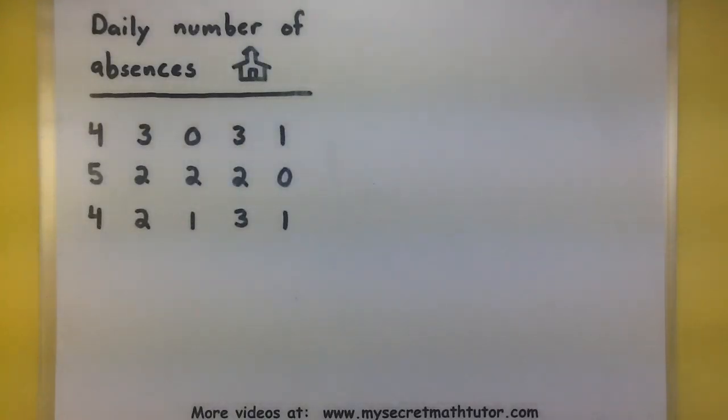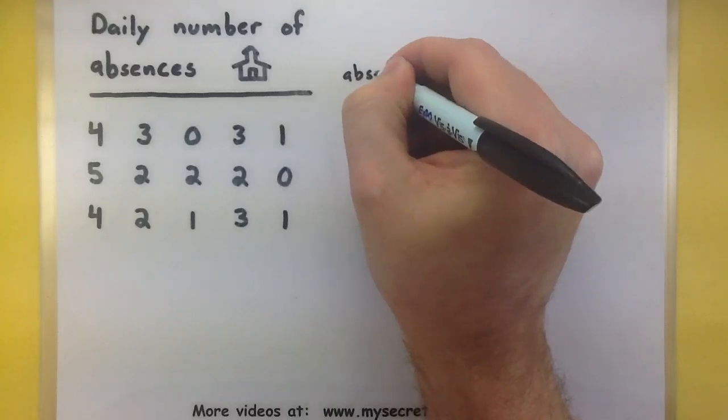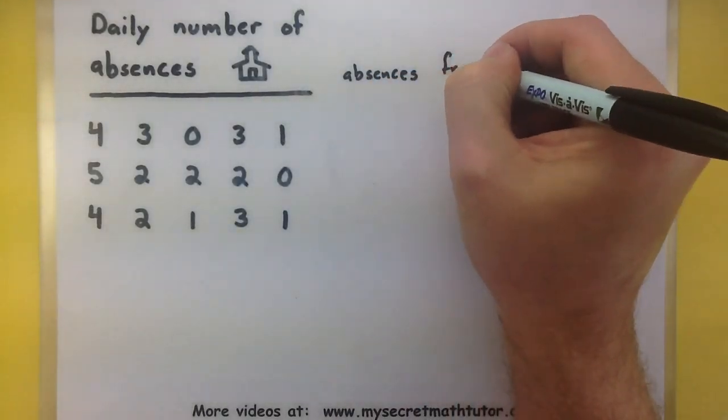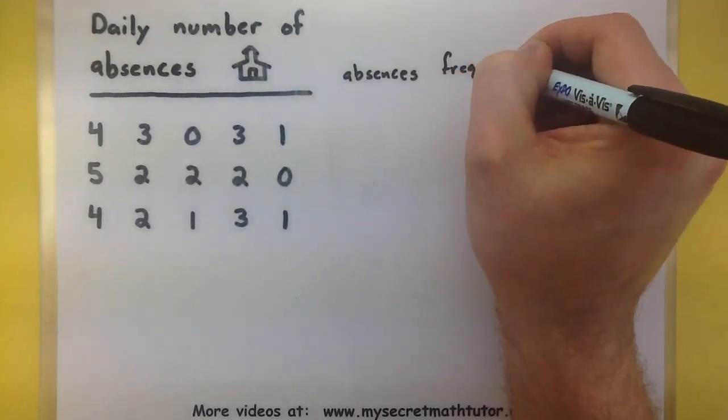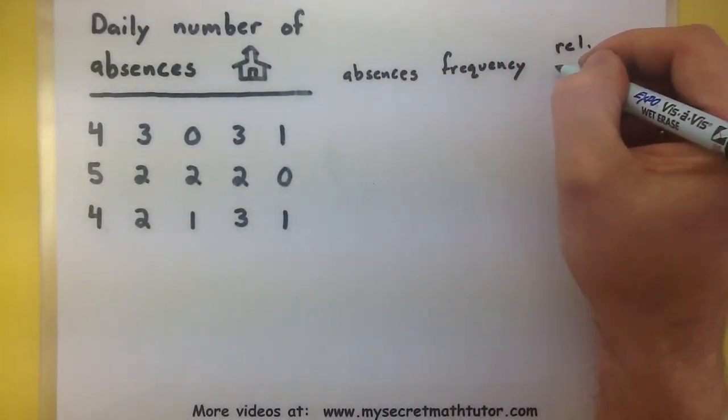I'm going to start off building my chart by just listing out all of my data values, then all of their frequencies, and then we'll actually build the relative frequency. So my absences, frequency, and we'll leave some space for the relative frequency.